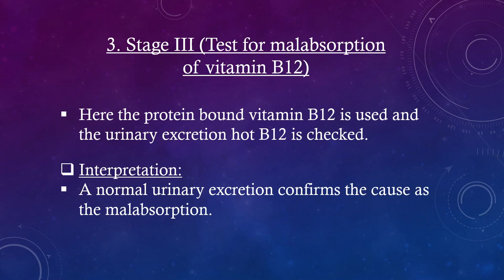Stage 3 — Test for malabsorption of vitamin B12: Here, the protein-bound form of B12 is used and urinary excretion of hot B12 is checked. A normal urinary excretion confirms the cause as malabsorption.